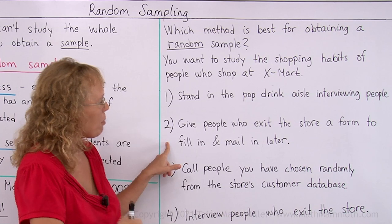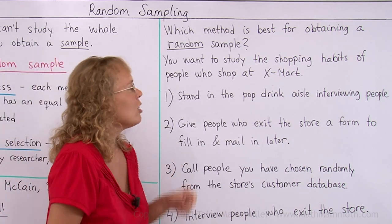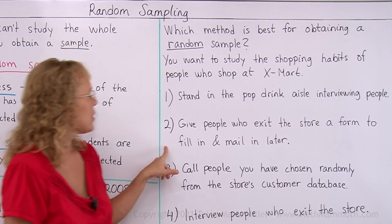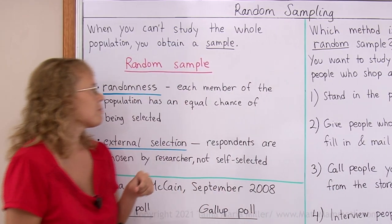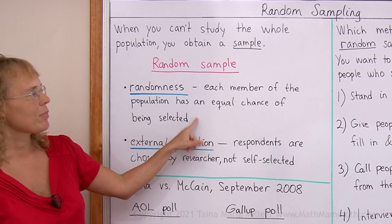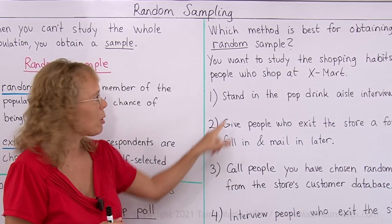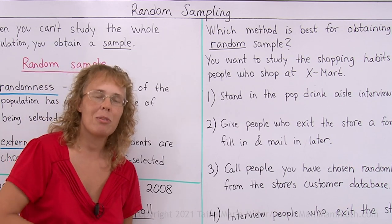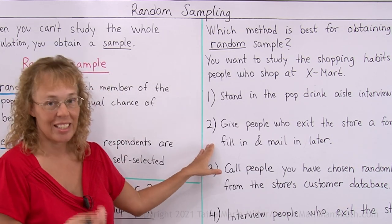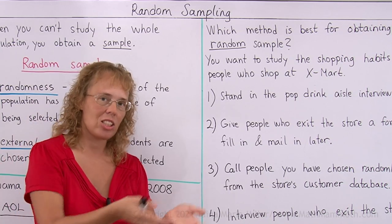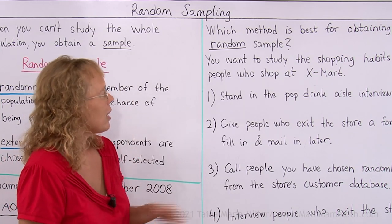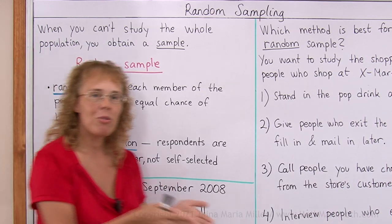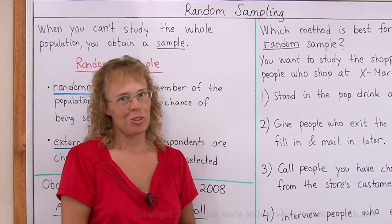The second method: give people who exit the store a form to fill in and mail in later. This avoids the previous problem. Now everybody — whether they are health nuts or just buy junk foods — has a chance of being selected, because everybody exits the store. However, this method has the problem of self-selection, because you give them the form and then they choose whether they fill it in or not.